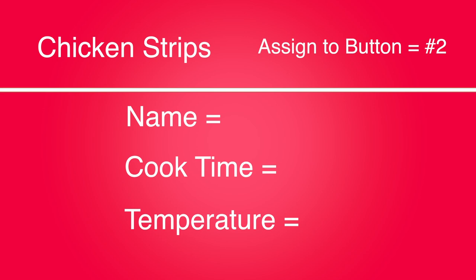For our example, chicken strips, we're going to call them strips. They're going to have a total cook time of 5 minutes 30 seconds, and then the temperature will be set to 350 degrees Fahrenheit or 176 Celsius.